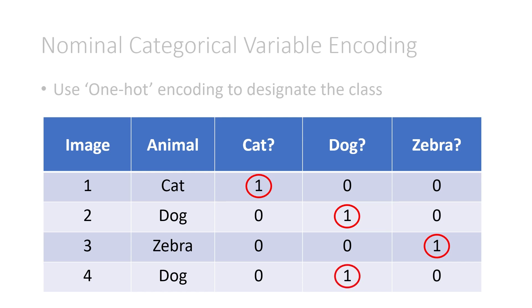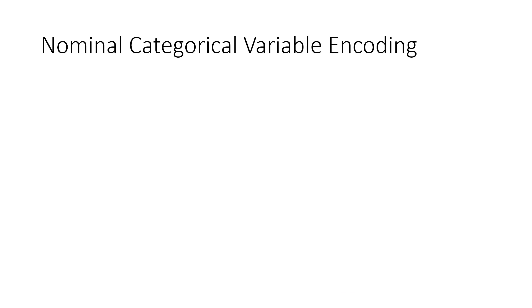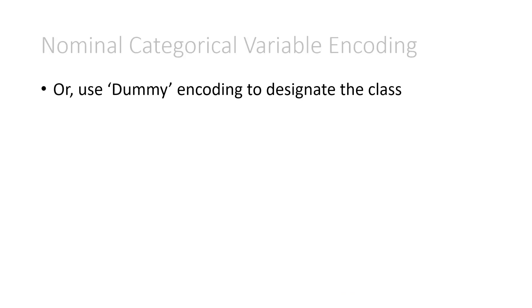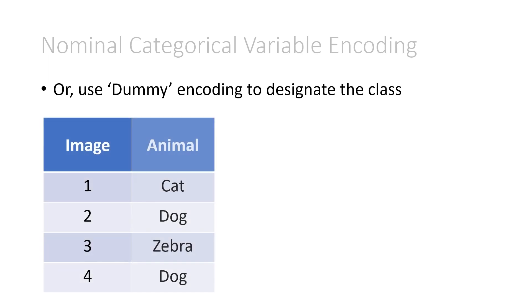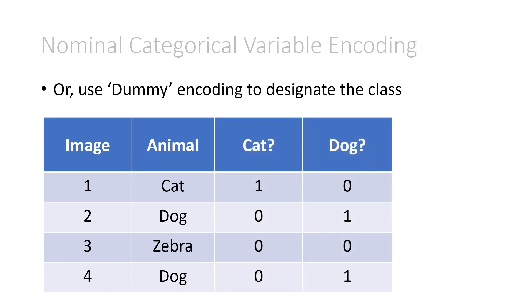There's also another way to do nominal categorical variable encoding. You could also use dummy encoding to designate the class, and it's going to look extremely similar to one-hot, but with one slight difference. So we have the same four images, cat, dog, zebra, and dog, and we're going to ask the same questions, except we'll leave out the zebra column. We can leave out any of the columns, because it is in fact unnecessary.